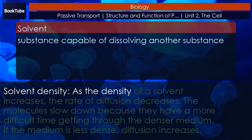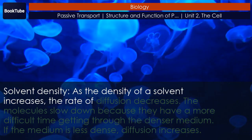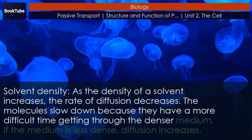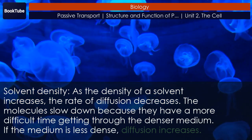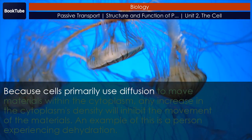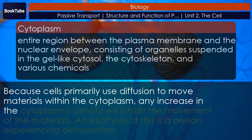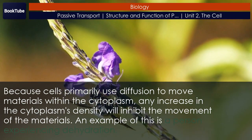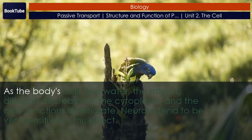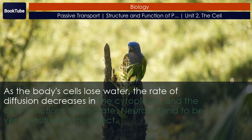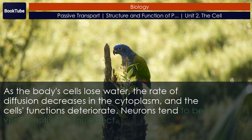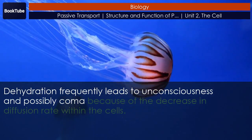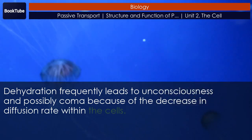Solvent density: as the density of a solvent increases, the rate of diffusion decreases. The molecules slow down because they have a more difficult time getting through the denser medium. If the medium is less dense, diffusion increases. Because cells primarily use diffusion to move materials within the cytoplasm, any increase in the cytoplasm's density will inhibit the movement of the materials. An example of this is a person experiencing dehydration. As the body's cells lose water, the rate of diffusion decreases in the cytoplasm, and the cell's functions deteriorate. Neurons tend to be very sensitive to this effect. Dehydration frequently leads to unconsciousness and possibly coma because of the decrease in diffusion rate within the cells.